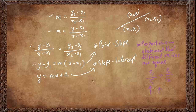Any line that is horizontal, whose gradient is 0, would have an equation in the form y equals to a. Any line that is vertical, whose gradient is undefined, would always have an equation x equals to some number b.